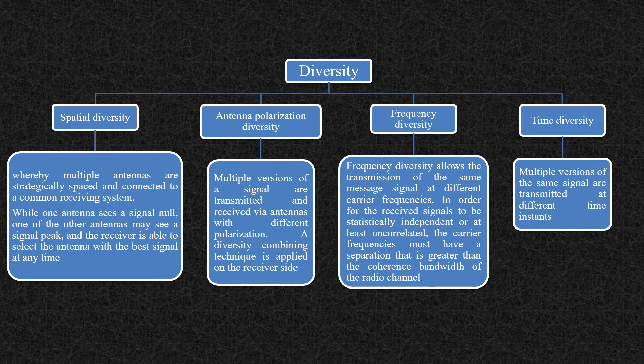In spatial diversity, multiple antennas are strategically spaced and connected to a common receiving system. While one antenna sees a signal null, one of the other antennas may see a signal peak. The receiver is able to select the antenna with the best signal at any time. In antenna polarization diversity, multiple versions of the signal are transmitted and received via antennas with different polarizations — like vertical and horizontal polarization — and a diversity combining technique is applied on the receiver side.